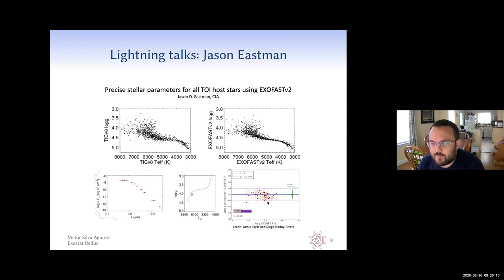And you might be concerned that that's a little too tight. Jamie Tayar, who's here, and a graduate student at Ohio State, Diego Godoy-Rivera, have independently used ExoFast 2 to do a sample of an asteroseismic sample comparing to their ExoFast 2 results. And this is what's shown in the bottom right here. They find a systematic offset of 0.01 dex with a scatter of 0.04 dex. So the agreement is very, very good. Okay.